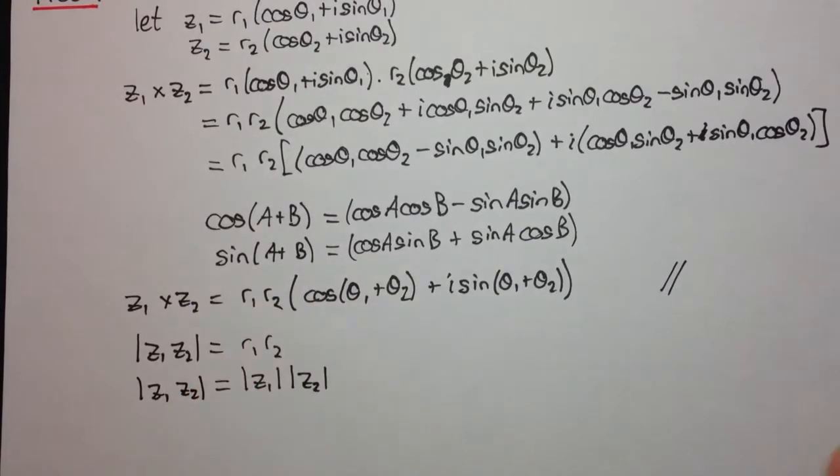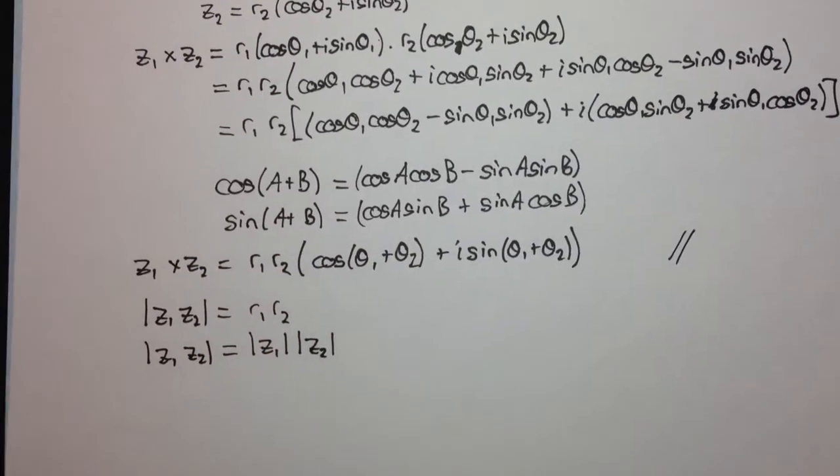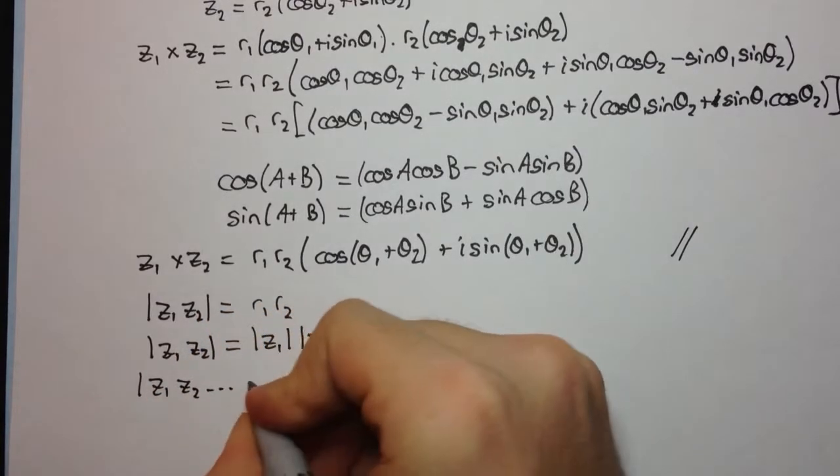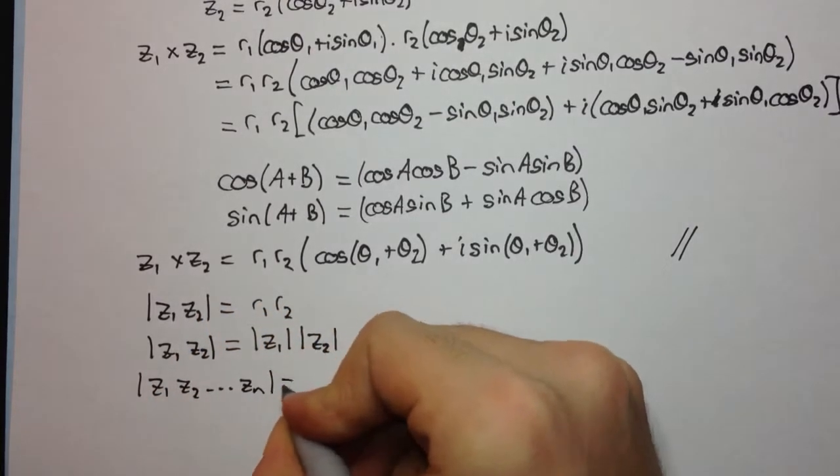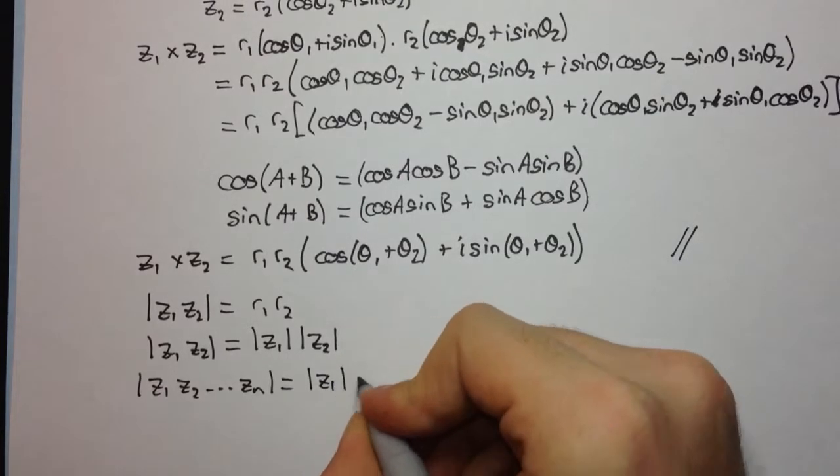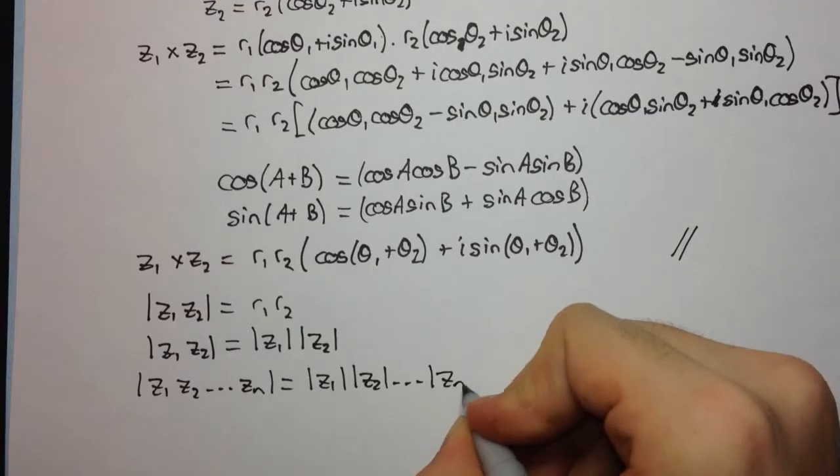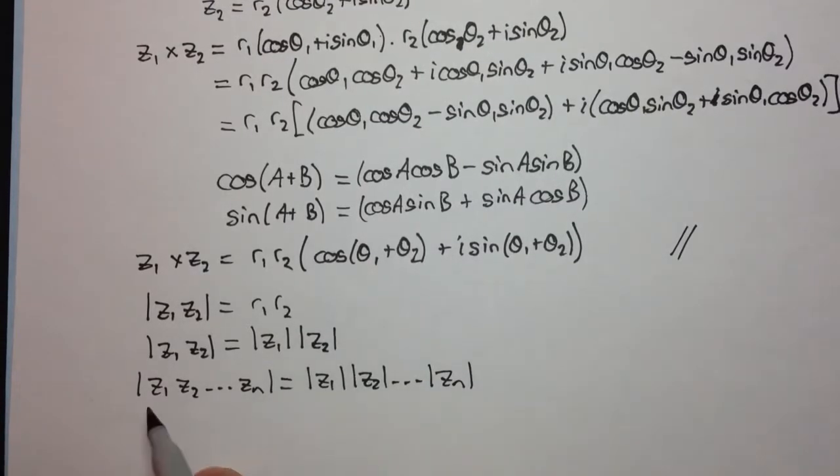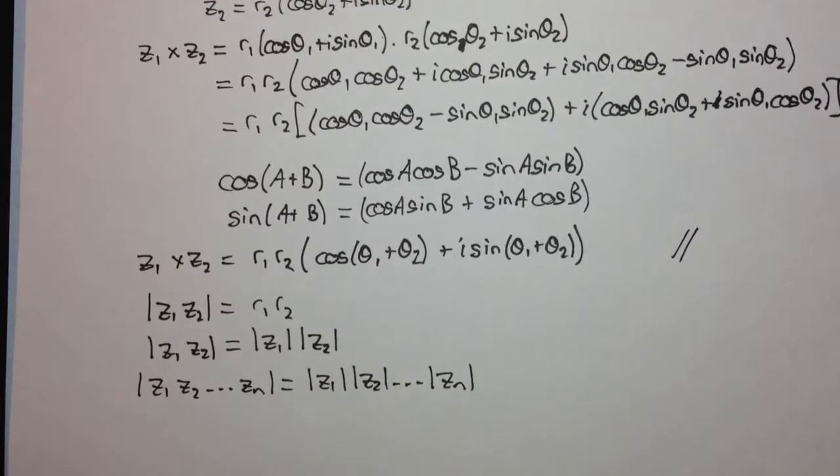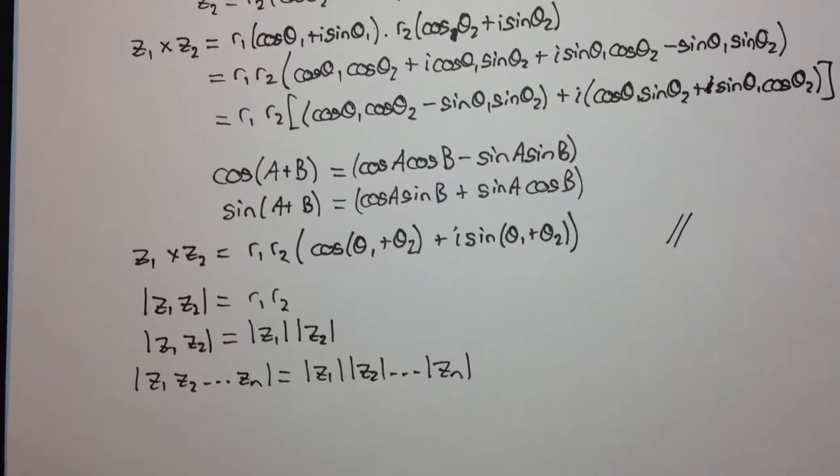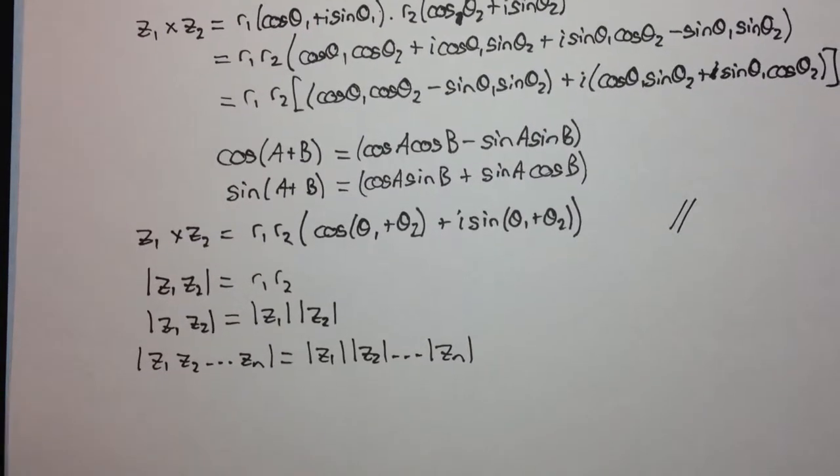Right? And we can, of course, generalize this statement to n complex numbers, and we get the modulus of z1 z2 up to zn equals the modulus of z1 times the modulus of z2 up to the modulus of zn. And I recommend you try to prove this by induction to yourself. It's a good exercise in inductive procedures, proving things by induction.